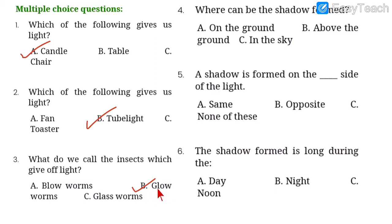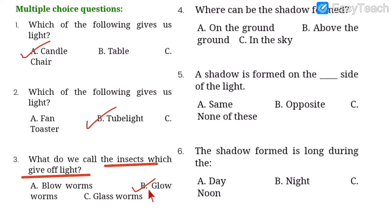The answer is option B — glow worms. This is something new you learned today: there are some insects that give off light, and they are called glow worms. You can also search on the internet to see images of these insects.